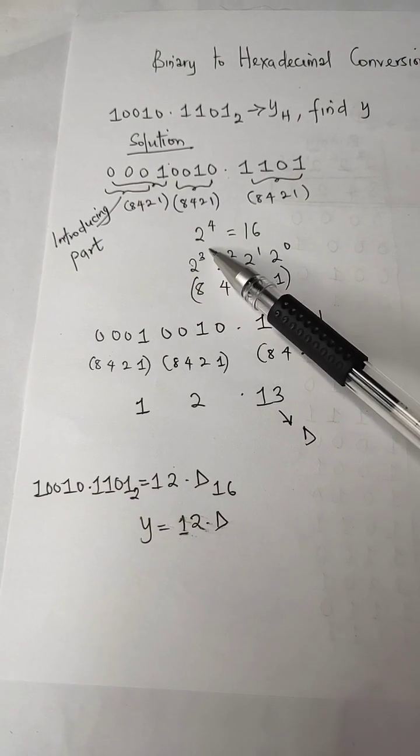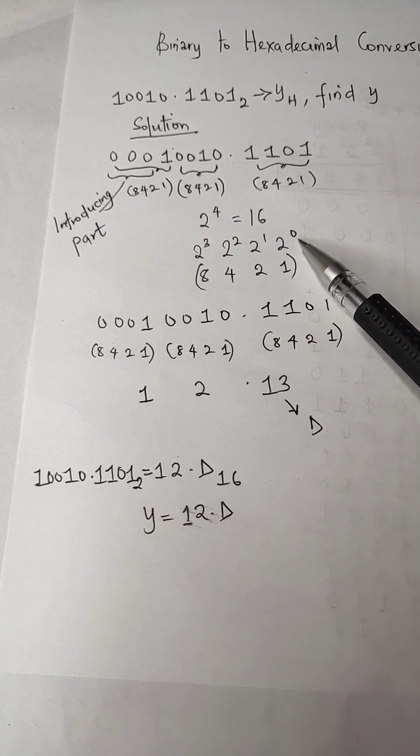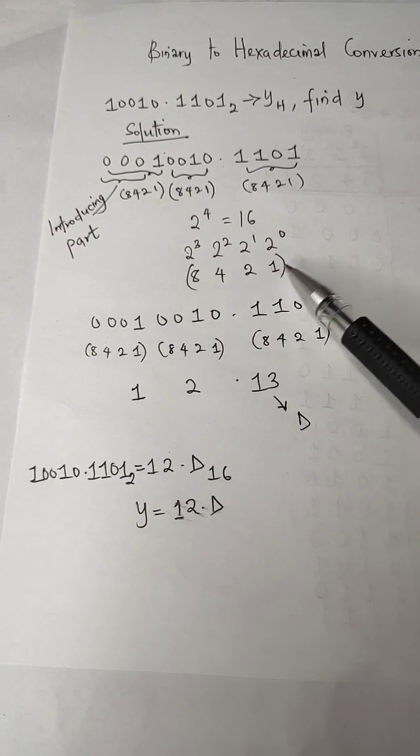Now the next thing to do is to look at the place value: 2 raised to power 3, 2 raised to power 2, 2 raised to power 1, 2 raised to power 0. Now what do we see here? We have 8, 4, 2, 1.